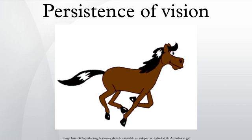Animation for most Saturday morning cartoons is produced as cheaply as possible and is most often shot on threes, or even fours — that is, three or four frames per drawing. This translates to only eight or six drawings per second, respectively.